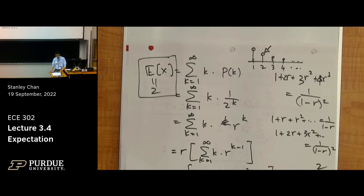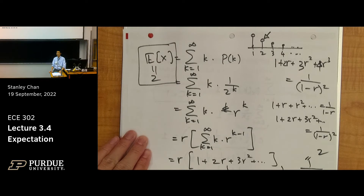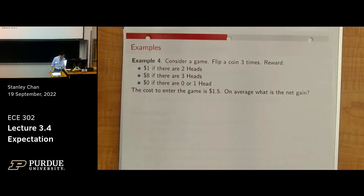The key difference between the expected value and the probability is that probability must always be positive, whereas the expected value can be positive or negative. Keep that in mind.